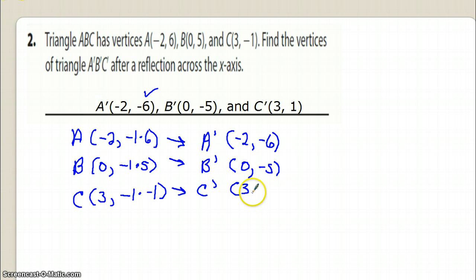And then C, we have 3, we're going to leave it alone, it's not going to be bothered, and then we would have -1 times -1. Of course, 1 times 1 is 1, and then a negative times a negative gives us a positive. So C carries the ordered pair of (3, 1).